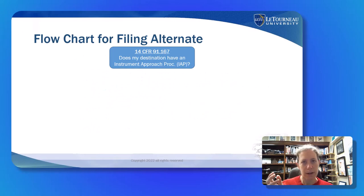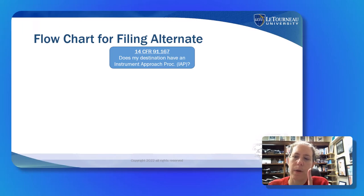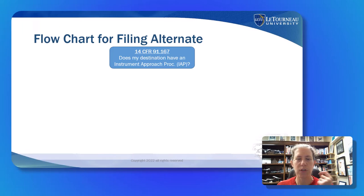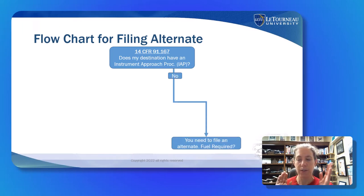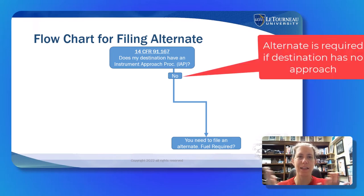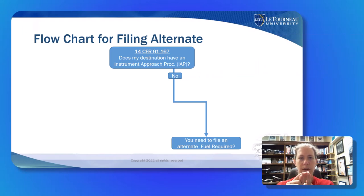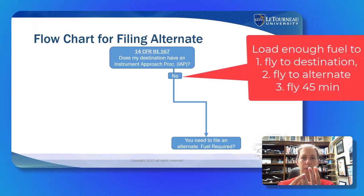I like flow charts, so we're going to go through one. The first question to ask: does my destination have an instrument approach procedure available? If it does not — if my airport of intended landing has no instrument approach — it's super easy: you need an alternate. We need enough fuel to go to the intended airport, to the alternate we identify, and then 45 minutes after that at normal cruise fuel consumption.